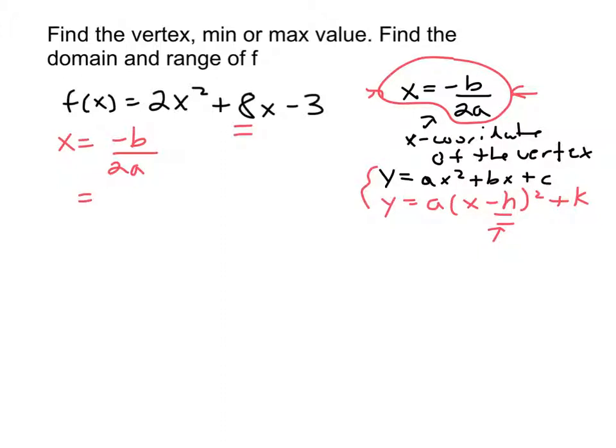So I'm going to start with x equals negative b over 2a. In this, here's b, so negative 8. Here's a, 2 times 2. So that will be negative 8 over 4, which is negative 2.